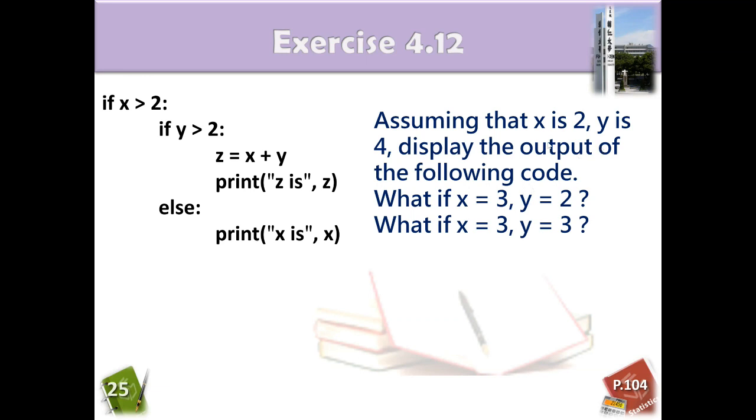And what if x equals 3 and y equals 2? When x equals 3, that satisfies the first statement. And then we're going to the next part. Then y is not larger than 2, it equals 2 but not larger than 2. So you would directly go to this part. So it will print x is 3 in this line.